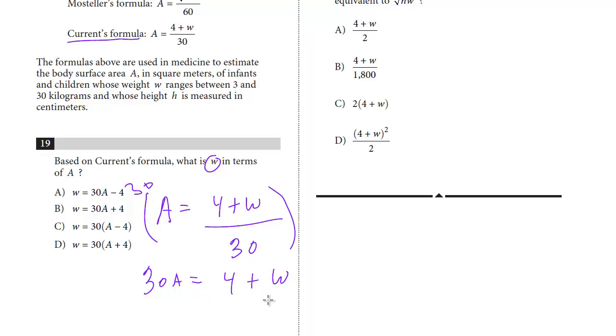And the last step is we just subtract 4 from both sides to isolate W. And so we get 30A minus 4. And the answer is A. Usually in a two-part question, the first one is easier.